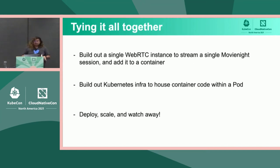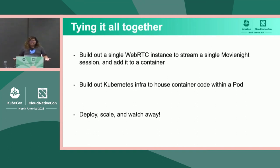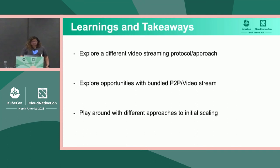So let's recap and tie it all together. First, you build out a single WebRTC instance to stream a single Movie Night session, add it to a Docker image, and add it to your pod. Then you build out the Kubernetes configuration around that pod to be able to scale it out, deploy it, and scale. After that, you're good to kick back, watch away, start your session, and keep on rolling.